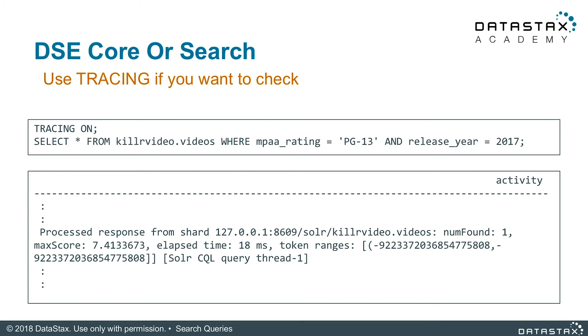Feel free to pause the video and take a look at this easy-to-understand chart. If you want to verify the path your query is taking, turn tracing on before running your query — it's as simple as adding TRACING ON before running your query. There will be a lot of information when tracing is enabled, but you can tell if search was used if you see the message about a response from the Solr URL.